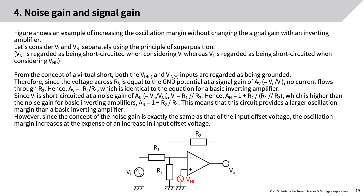Using the principle of superposition, VNI is regarded as short-circuited when considering VI, whereas VI is short-circuited when considering VNI. From the concept of a virtual short, both VN− and VN+ inputs are regarded as grounded. The voltage across R3 equals the ground potential at signal gain AV = VO/VI, so no current flows through R3; hence AV = −R2/R1, identical to a basic inverting amplifier. Since VI is short-circuited at noise gain AN = VO/VNI, the noise gain is higher than that of a basic inverting amplifier, providing a larger oscillation margin — however, this increases the input offset voltage effect.